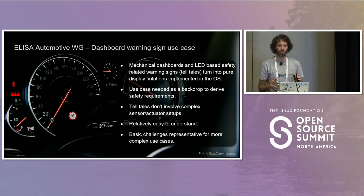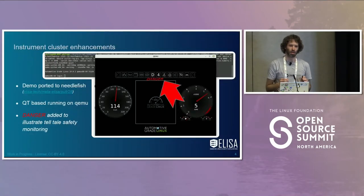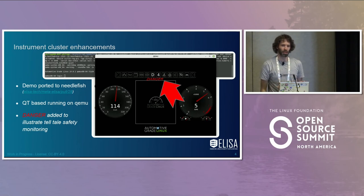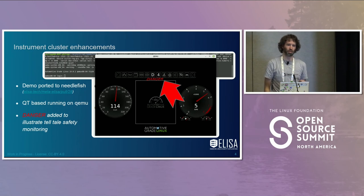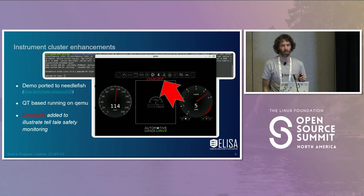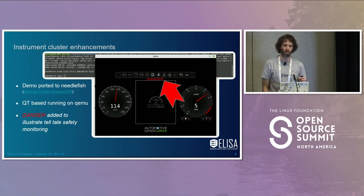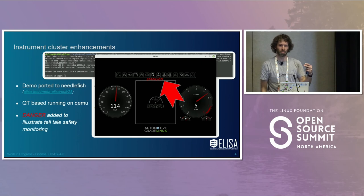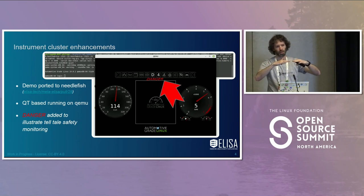The last benefit of this use case is that there is already a demo implementation available, created by Automotive Grade Linux. They mention us as a partner project and refer to us regarding instrument cluster use case working groups. The latest AGL release is called Octopus, and we are still on Needlefish. The main reason is that our demo is Qt-based, and with the latest Qt license changes, it's not commercially attractive for automotive for some members anymore. The main track is now moving to Flutter as a new rendering framework, but the lower layers — the kernel and graphics subsystem — are basically independent from that upper layer.